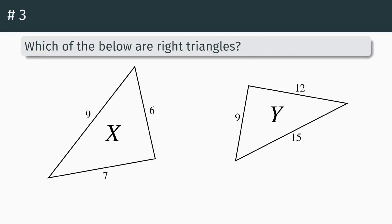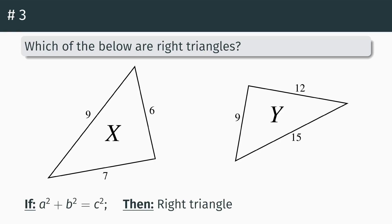Moving on, we've got number three: which of the two below are right triangles? We've got triangle X and triangle Y, and we're trying to figure out which of them, if either of them, is a right triangle. To figure this out, we have to do sort of the opposite of the Pythagorean theorem — the Pythagorean converse. The Pythagorean converse says: if a squared plus b squared equals c squared, then you can say it's a right triangle. You don't have to know that it's a right triangle at the beginning; you just have to show that the equation is true. Note that c here just means the longest side, since you don't actually know for sure whether c is a hypotenuse until you've confirmed it's a right triangle.